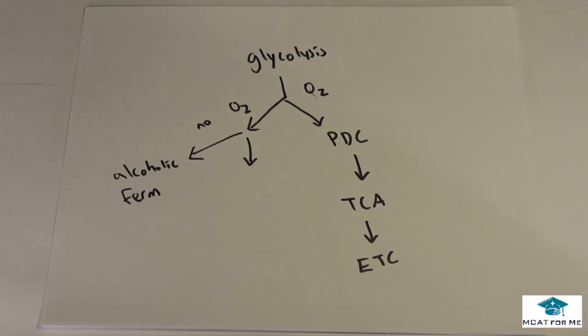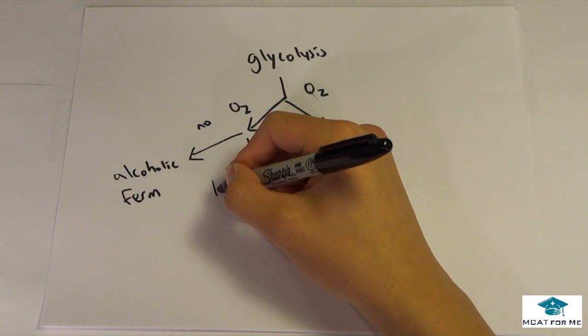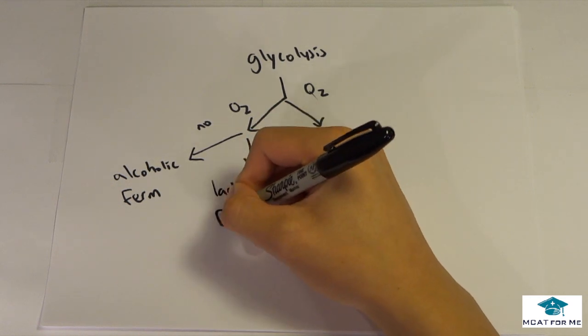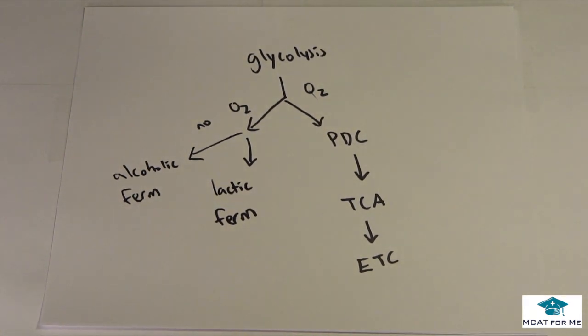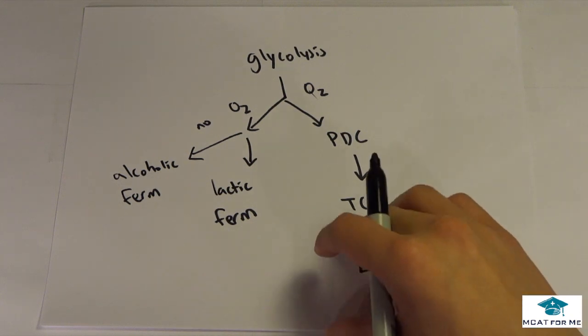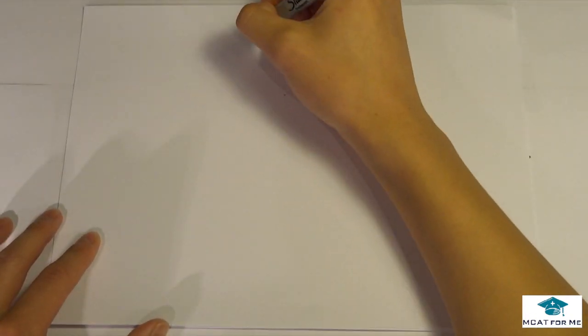If we don't have oxygen there's going to be two types of fermentation. There's going to be alcoholic fermentation and lactic acid fermentation. Alcoholic fermentation happens in yeast. Lactic acid fermentation happens in a lot of things. We do lactic acid fermentation in our muscles when we exercise. We produce lactate or lactic acid. We can go over very briefly what the point of fermentation is.